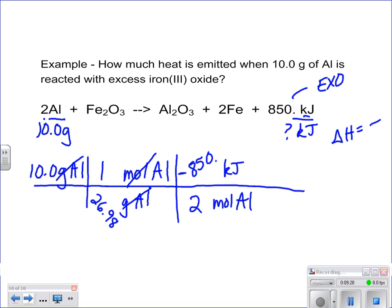So now we've got negative 850 kilojoules. That's it. We are looking for kilojoules, so we can stop. And we plug this in. We're going to get a negative value. And the answer is negative 158 kilojoules.